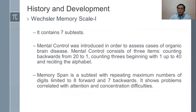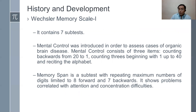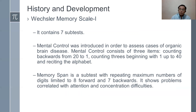The Weschler Memory Scale has seven subtests. Mental control was introduced — used to assess cases of organic brain disease, meaning whether there is actual physical damage to the brain before the test, through accident, or from causes of war. Mental control has three items: counting backwards from 20 to 1, counting in threes beginning with 1 up to 40, and reciting the alphabet.